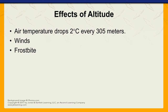Air temperature drops 2 degrees every 305 meters of altitude, affecting the body's ability to maintain core temperature. As you gain altitude going up a hill or mountain, temperature drops. Winds also have effects on the body's temperature maintenance. At elevations above about 2,400 meters, frostbite becomes much more common.